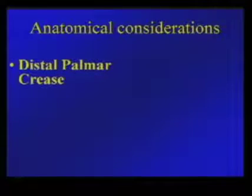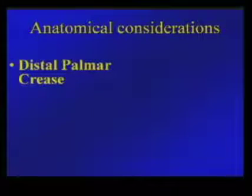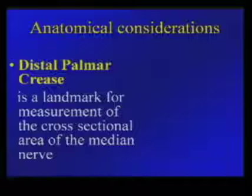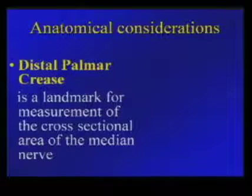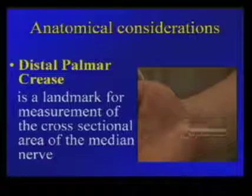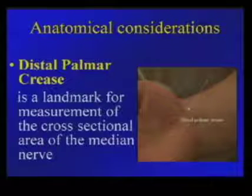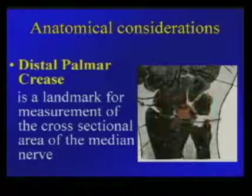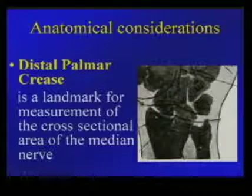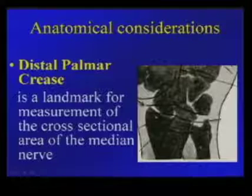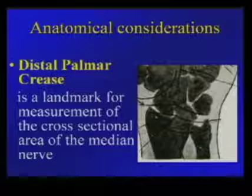In terms of where to measure, several papers have shown that the distal palmar crease is an easy landmark for transducer placement, as it is just proximal to the entrance to the carpal tunnel — where most of the swelling is noticed surgically. That carpal crease, indicated by the arrows, corresponds to about the radiocarpal joint and is just proximal to the carpal tunnel.